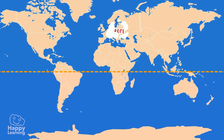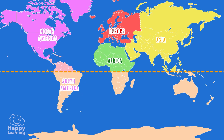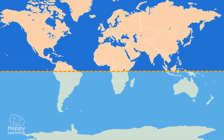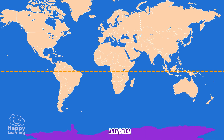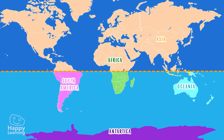Europe, North America, almost all of Asia, a good part of Africa, and a little bit of South America are in the northern hemisphere, and therefore many more people live there. The southern hemisphere is emptier — it contains Antarctica, southern Asia, a bit of Africa, Oceania, most of South America, and lots and lots of water.